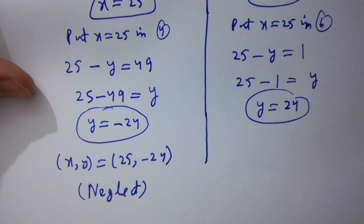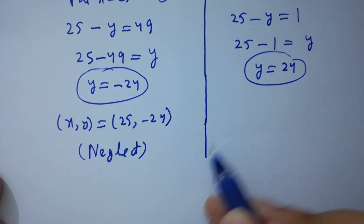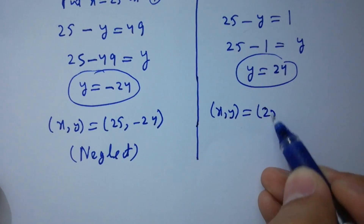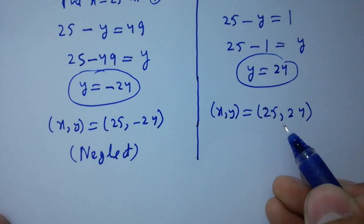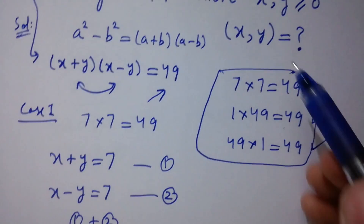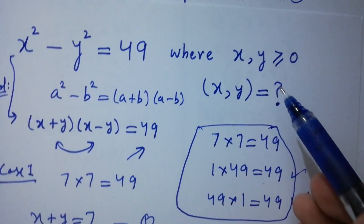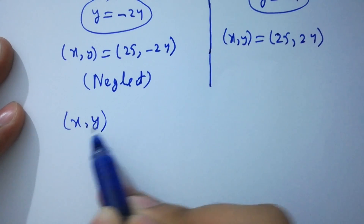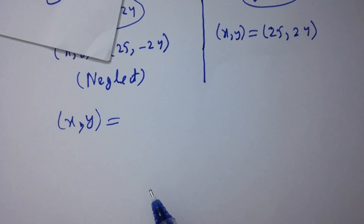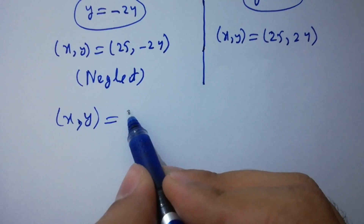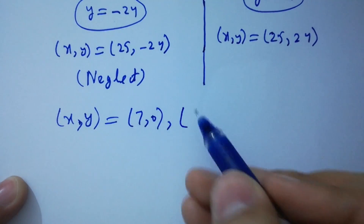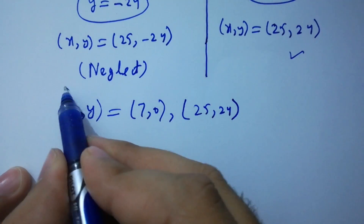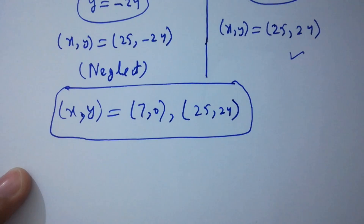The solution x equal to 25 and y equal to negative 24 can be neglected because we want positive values of x and y. So we have two valid solutions: the first solution is x equal to 7 and y equal to 0, and the second solution is x equal to 25 and y equal to 24. Thank you for watching this video.